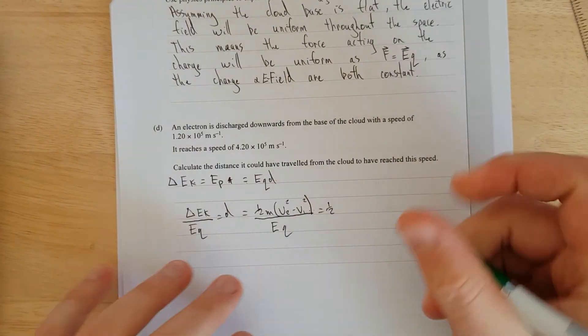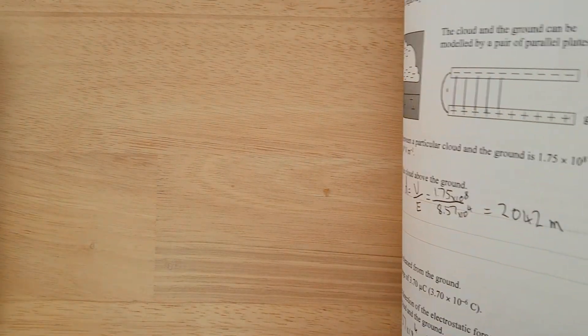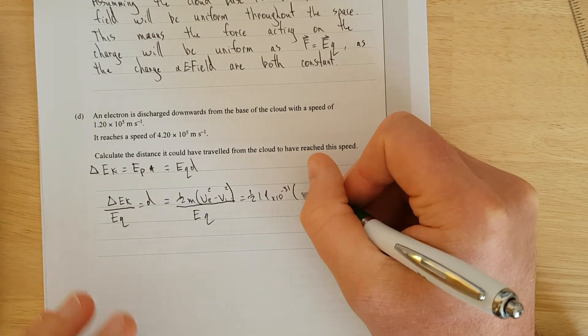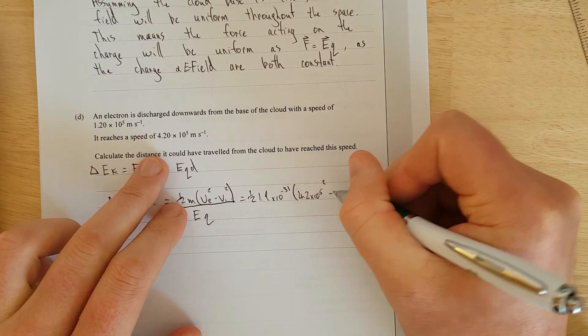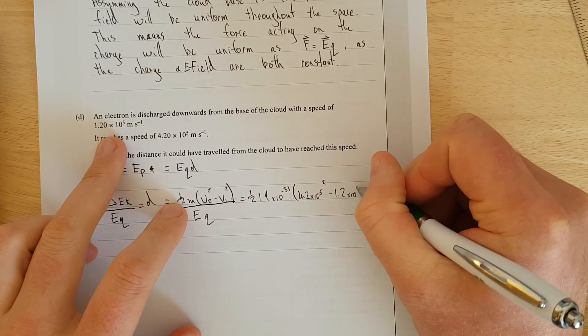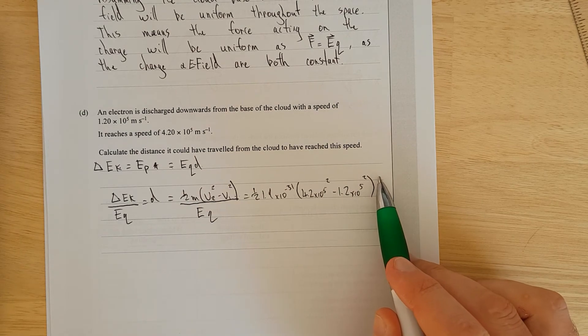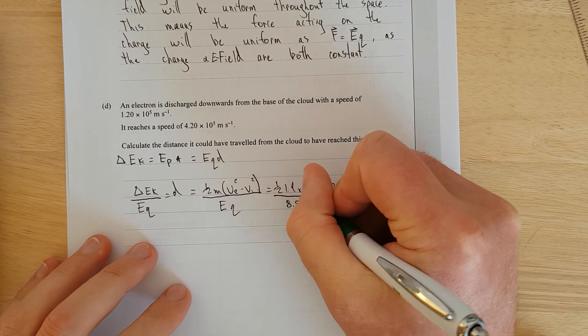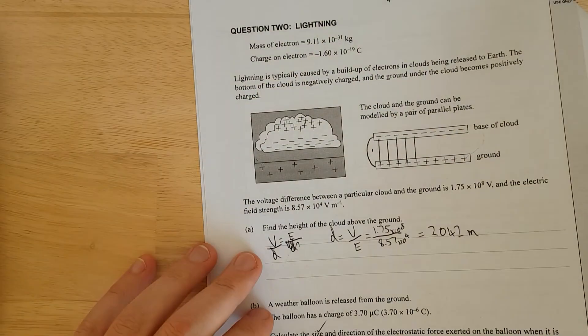Then I'll put the numbers in, so it's going to be half. What's the mass of the electron? 9.1 times 10 to the negative 31. Brackets. Final speed is 4.2 times 10 to the 5 squared, minus 1.2 times 10 to the 5 squared. You have to have the squared there. Occasionally kids pull the squared out of the equation and that screws it up completely. And then the electric field strength is still the same as 8.57 to the 4, so 8.57 times 10 to the 4 times the charge 1.6 times 10 to the negative 19 for an electron.